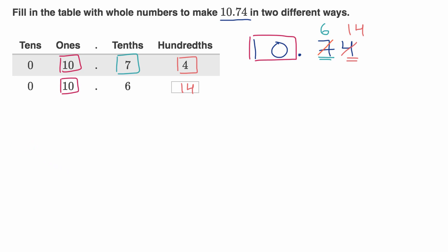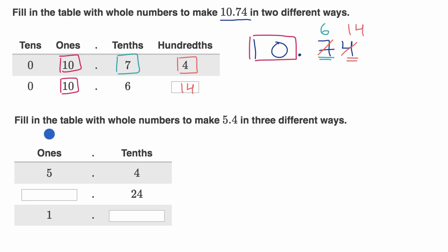Let's do another example, just to really make sure we're understanding what's going on. So once again, they say fill in the table with whole numbers to make 5.4 in three different ways. So pause this video and see if you can have a go at it.